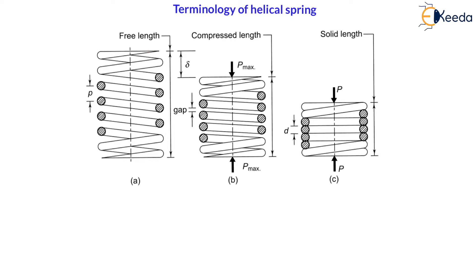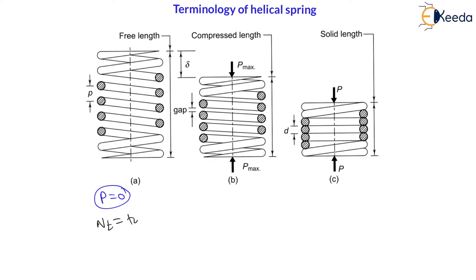In spring terminology we will see free length, compressed length, and solid length. I have taken this diagram directly from Bibi Bandari, one of the good authors for machine design. Free length is nothing but when the force acting on the spring is zero — it is an unloaded spring — and the total length of the spring is called free length. The distance between two adjacent coils is the pitch. There are various coils — first, second, third, fourth, fifth, and so on — totalling NT coils. NT is nothing but the total number of coils.